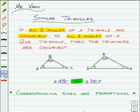One of the most important characteristics about similar triangles is that corresponding sides are proportional. This means that the ratio of any two corresponding side lengths, like length of AB over the length of DE...